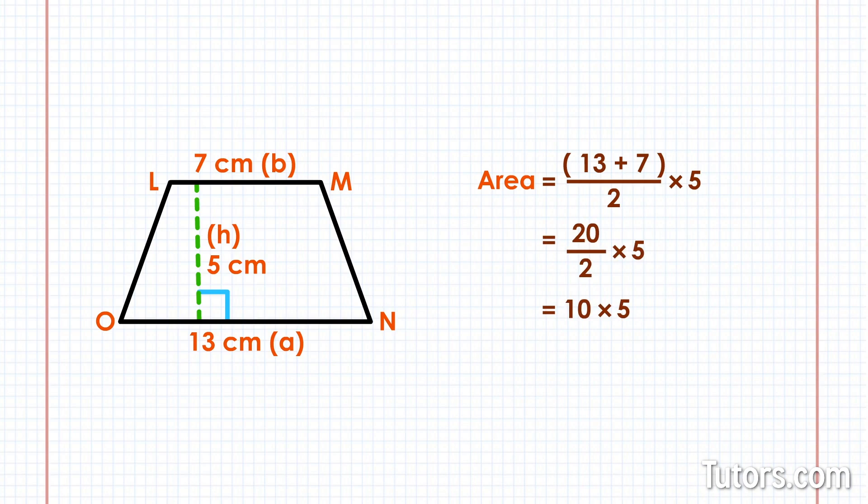Finally, we multiply and get our answer. Ten times five equals fifty centimeters squared. The area of this trapezoid is fifty square centimeters.